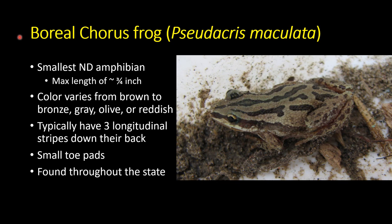The first species we'll cover is also the smallest — the boreal chorus frog, Pseudacris maculata. It's the smallest amphibian in North Dakota, maxing out at about three-quarters of an inch. They're incredibly variable in color — brown is common, but also bronze, gray, olive, red, and orange. Regardless of color, you almost always see three longitudinal stripes — or bands of dark markings — down their back.